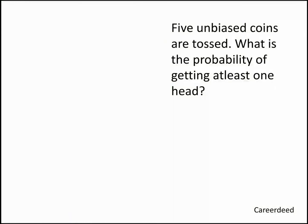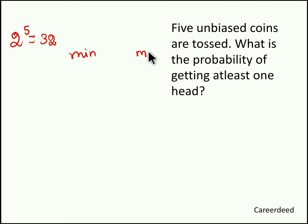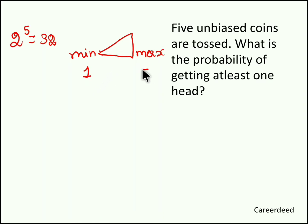Question 3: Five unbiased coins are tossed. What is the probability of getting at least one head? While tossing five coins the total sample space is 2 power 5, which is 32. At least means flow happens from minimum to maximum. At least one head means minimum there should be one head, and maximum we can get five heads. So 1, 2, 3, 4, and 5 heads are accepted. Zero heads is not accepted.